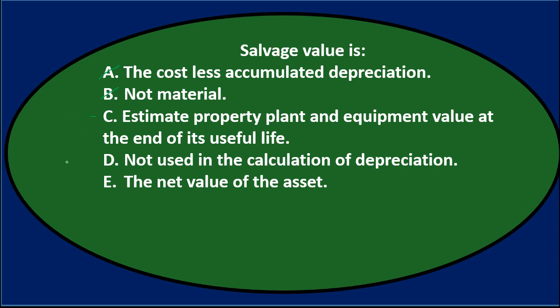D says not used in the calculation of depreciation — typically it is used. In the straight-line method it's clearly there: cost minus salvage. In the double declining balance method, an adjustment is made at the final year to account for salvage, so it's not D. E says the net value of the asset, which would be the same as book value — cost minus accumulated depreciation — so that's not salvage value unless we're at the end of the asset's life. So we're left with C.